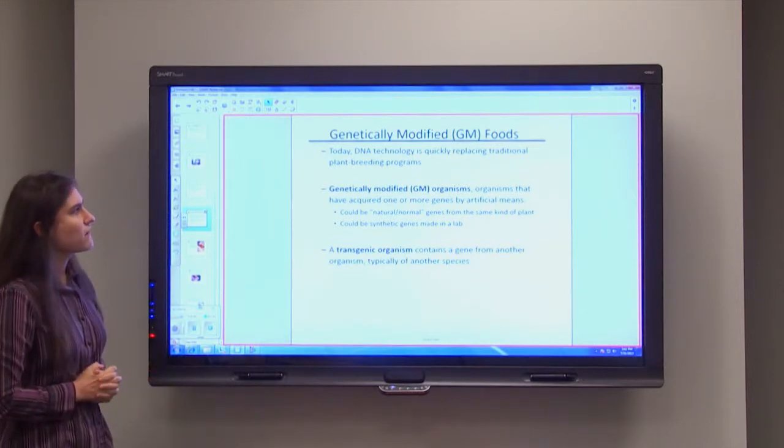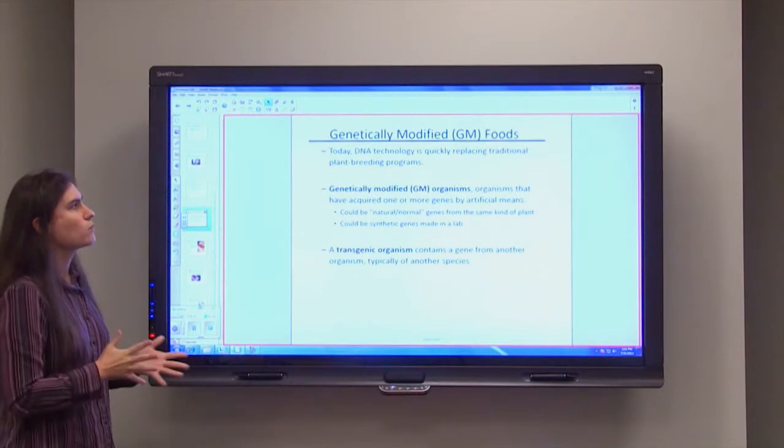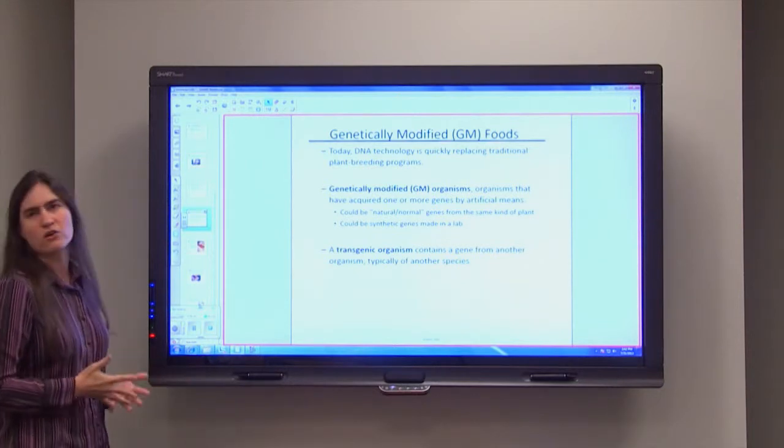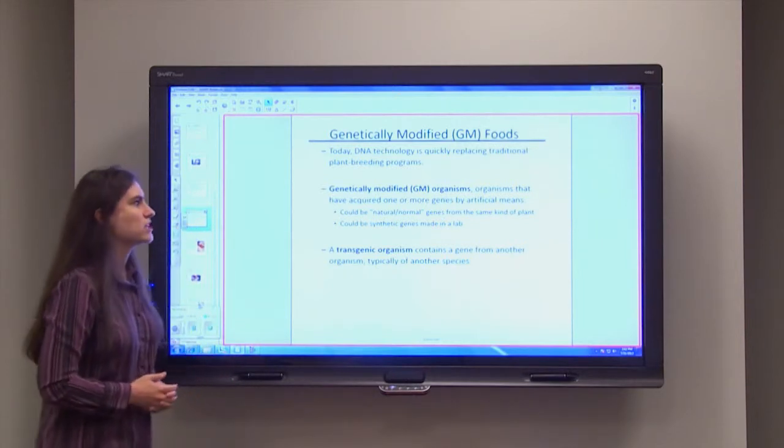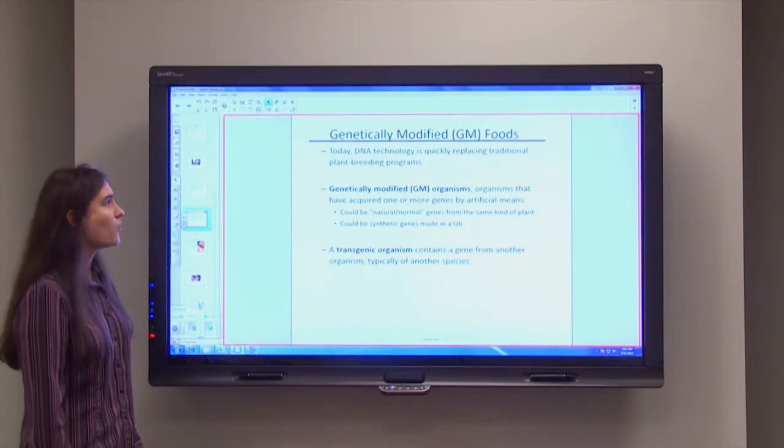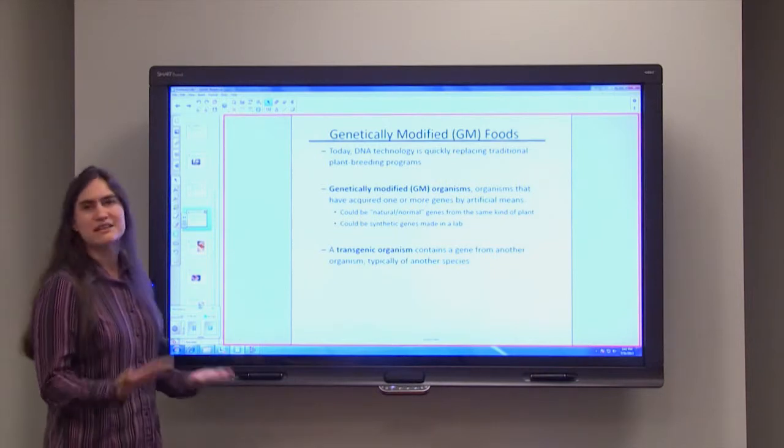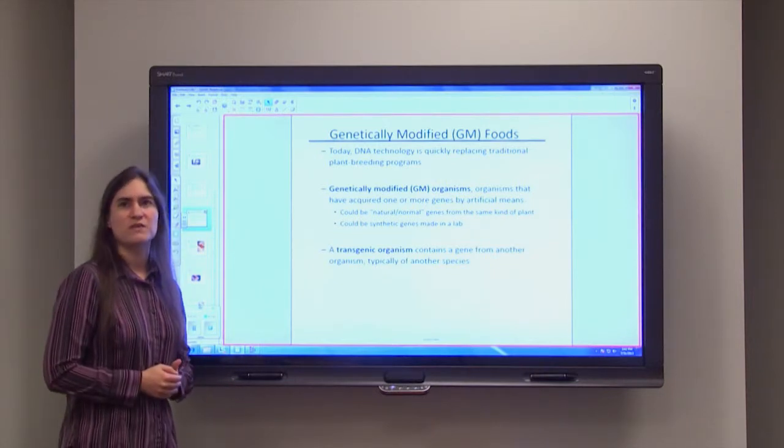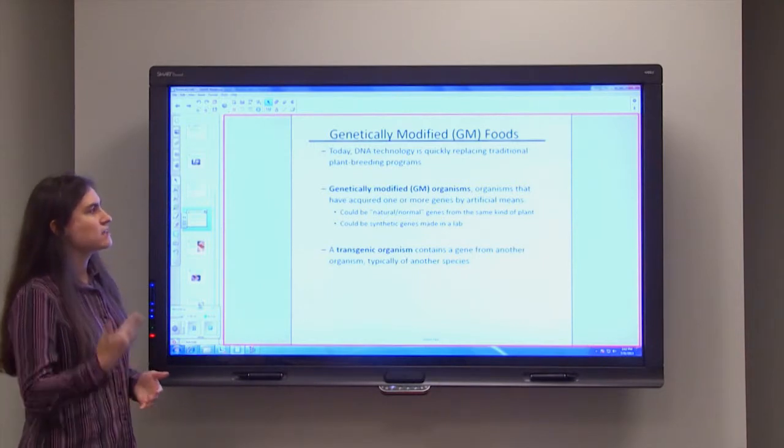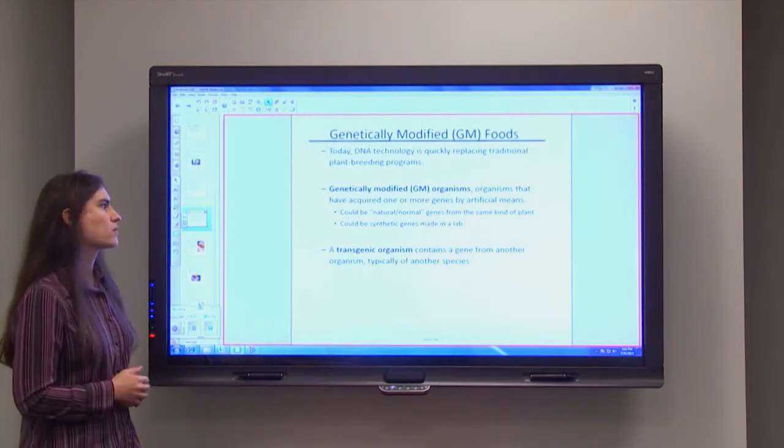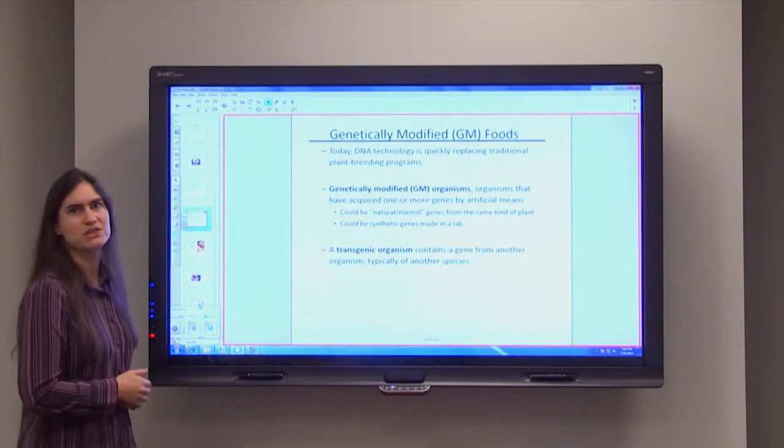So a genetically modified organism means that it has one or more genes that are acquired by artificial means. So some of these genes could be absolutely natural, absolutely normal genes from the same kind of plant, or these genes could be completely synthetic, something that we made up new in the lab. And then these transgenic organisms, again, are containing one gene from another organism, typically from another species.